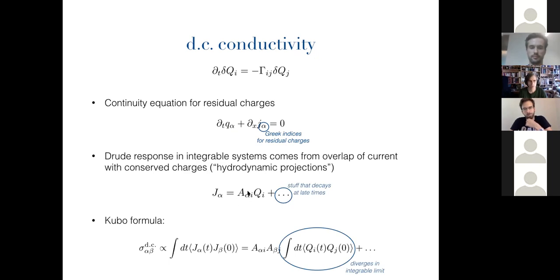And so the slow part of the current corresponds to its projection onto the set of conserved charges that I had in the previous slide. Yes, there's some coefficients, and the current is a vector in some space, and it's written as, you can say it's got some weight on the charges, it's got some other past stuff that decays fast, and that in Euler-scale GHD you just throw out.